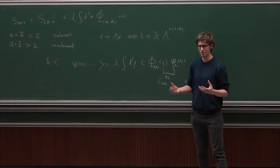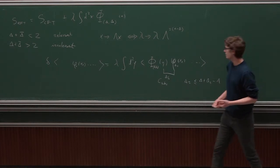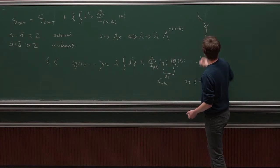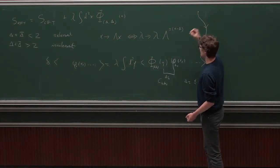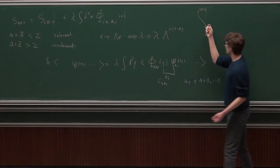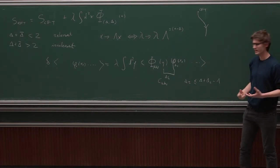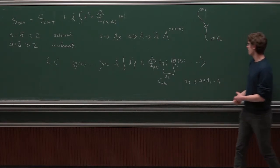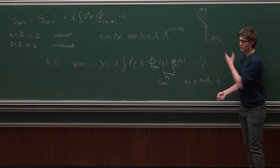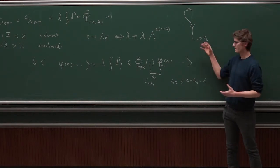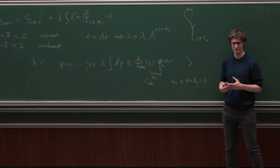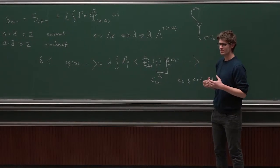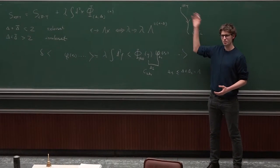You will get a continuum quantum field theory that is no longer scale invariant. If you study how it evolves with scales, you will find an RG flow where the theory in the UV is controlled by the original CFT, and in the IR at long distances it will have a different behavior. Typically, you expect it to flow to a second CFT, or perhaps this IR CFT will be trivial, and you describe the IR in terms of a scattering theory of particles with masses. Also, in this quantum field theory, the space of operators is essentially isomorphic to the space of operators of the original CFT.